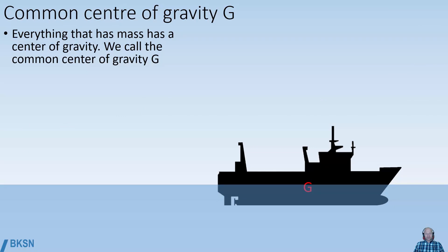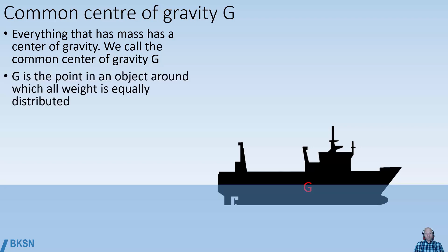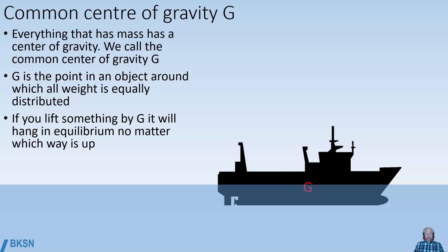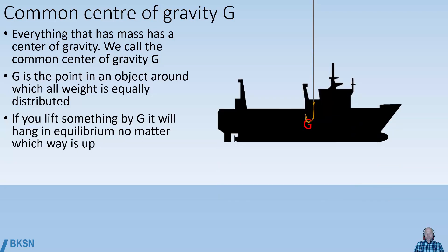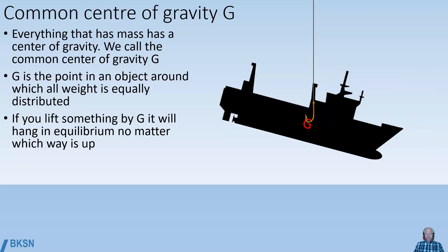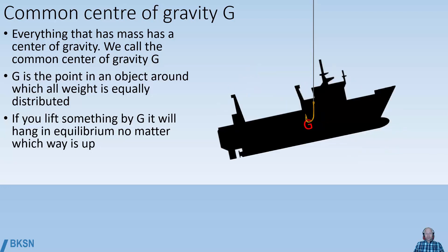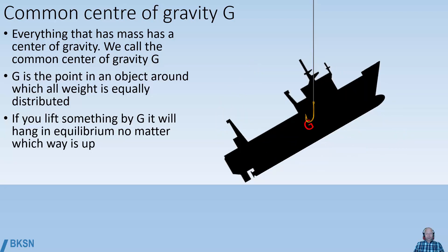We start with the term the common center of gravity, abbreviated G. Everything that has mass has a center of gravity. G is the point in an object around which all the weight of the object is equally distributed. If we, as in the figure here, lift the vessel up by its center of gravity, we will see that it hangs in equilibrium no matter which way is up. That's the definition of G.